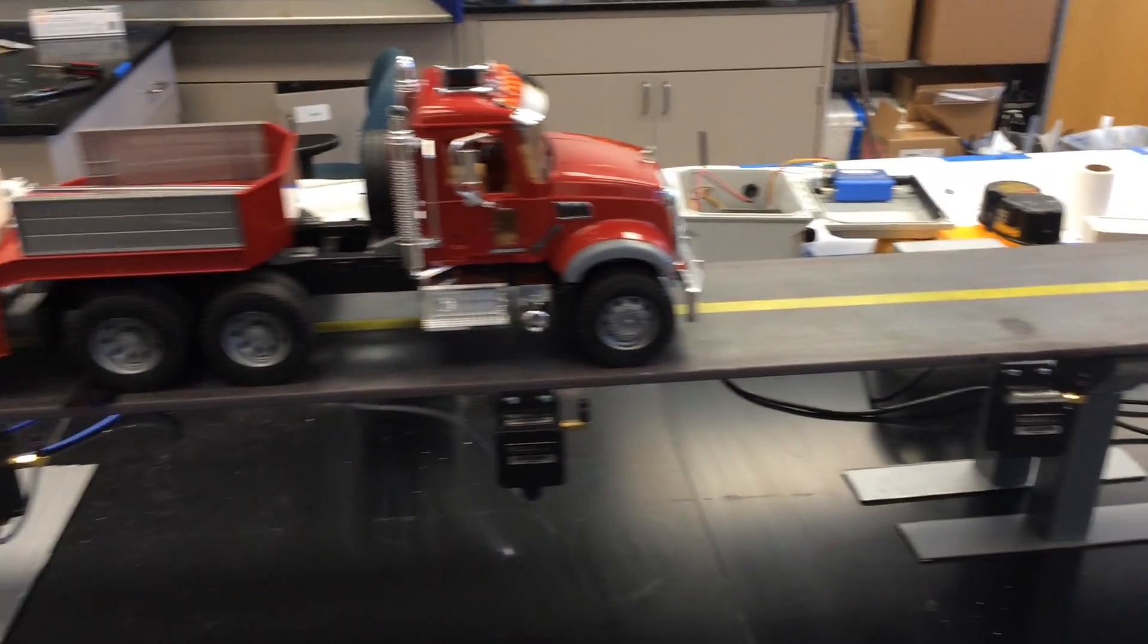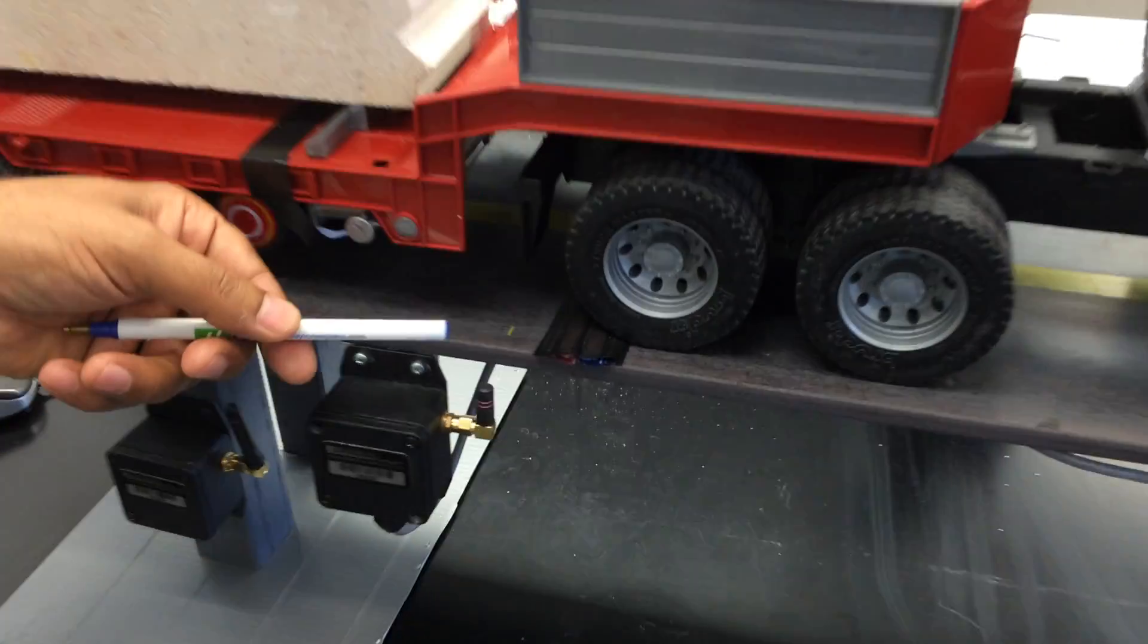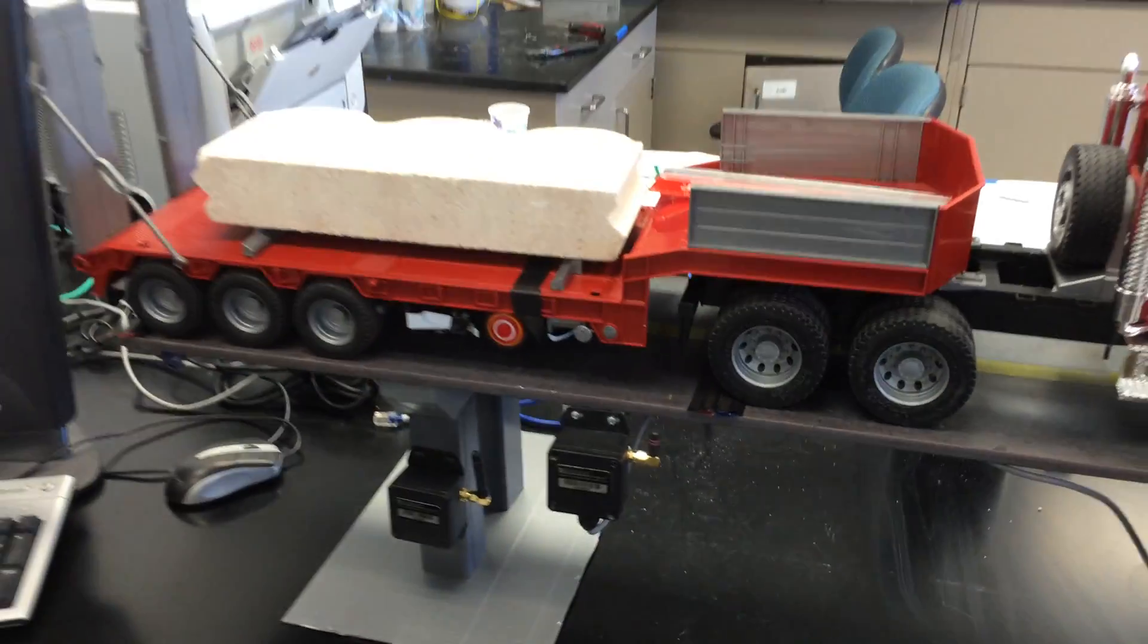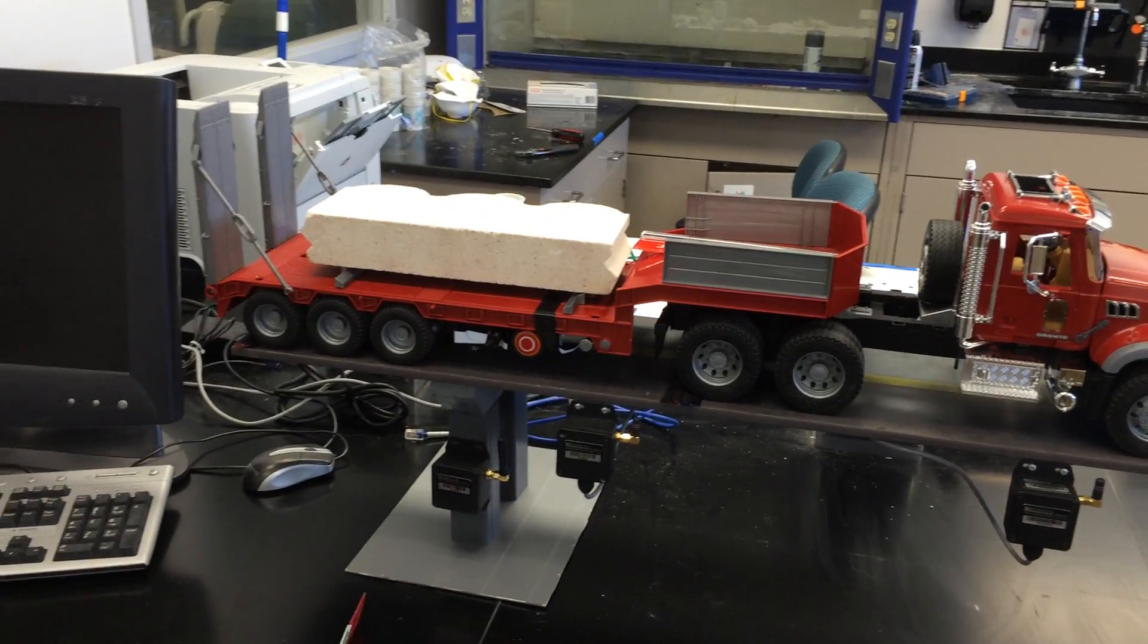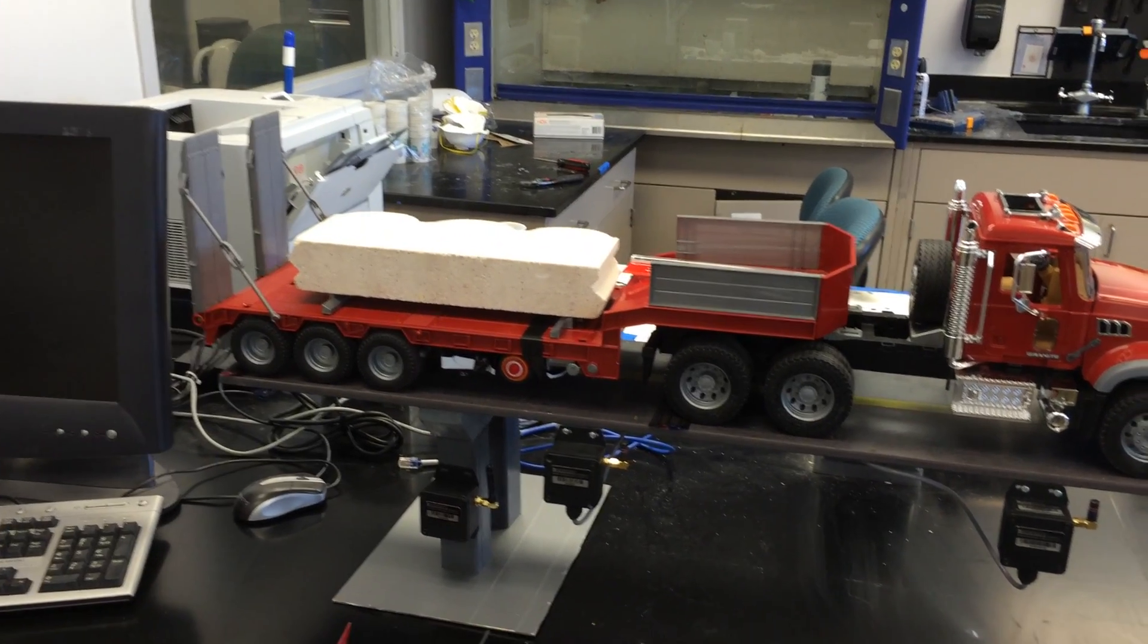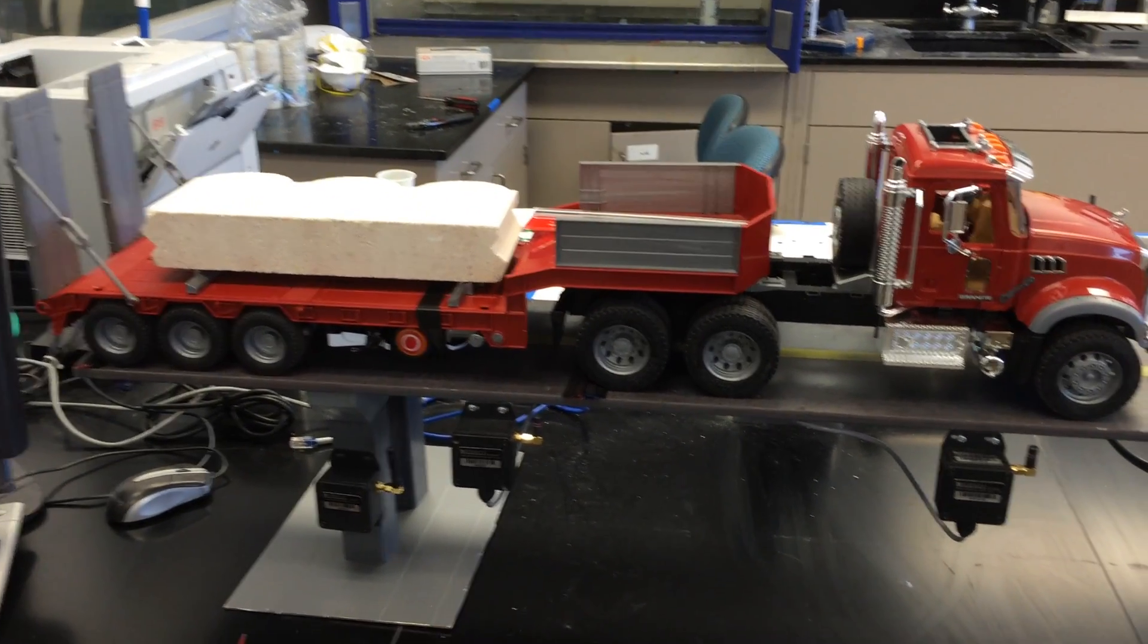To demo the vibration SenseBot, a small speed bump has been created on the deck. When the truck passes over the bump, it produces a small magnitude bouncing in the steel deck which will be picked up by the vibration SenseBot.